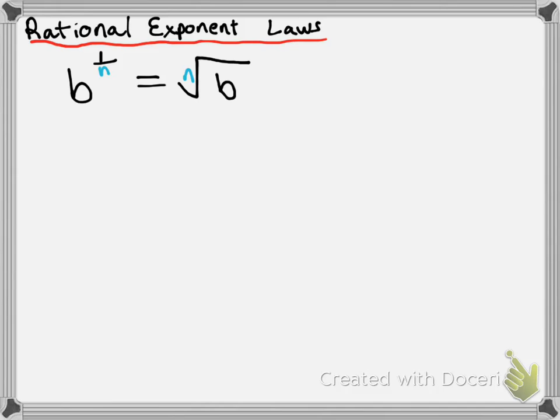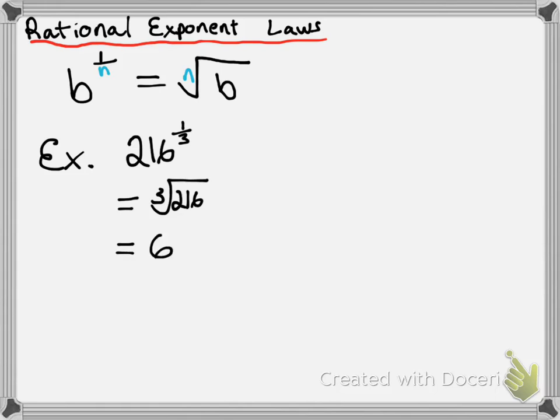Let's see some specific examples of using this. First example: let's say we have 216 to the power of 1 over 3. According to the first rational exponent law, we can take that 3 on the bottom of the fractional exponent and turn it into a third root. So we're taking the third root of 216, which is just 6. That's a really basic example.